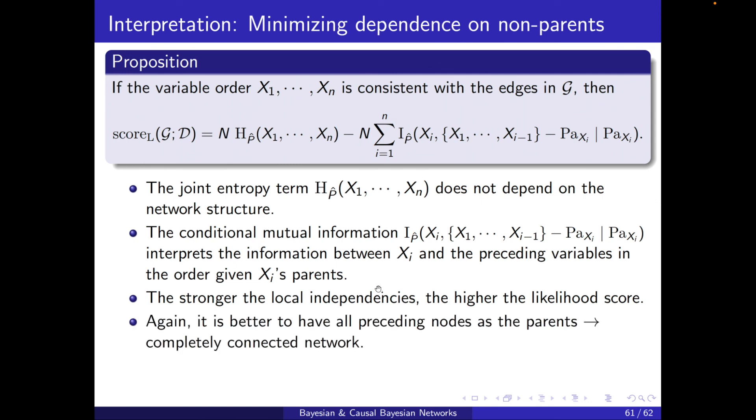So, again, it's leading us to a completely connected network. And this results in a model that overfits the training data. If we write down the joint probability distribution, we see that it's basically what the chain rule provides. There is no conditional independence that would simplify the joint distribution. And this model, as a result, may not generalize well to new data sets. Unless we tackle this overfitting by some techniques, this is a shortcoming using the likelihood score.